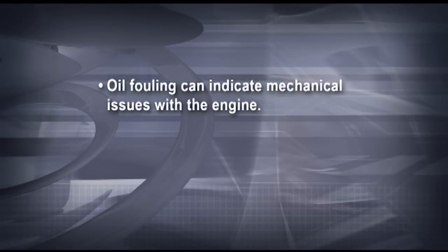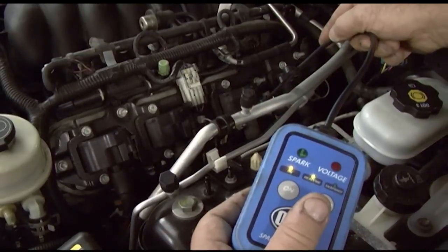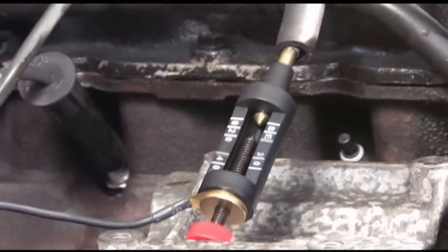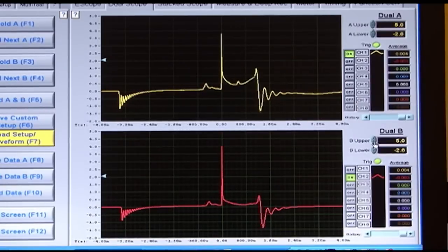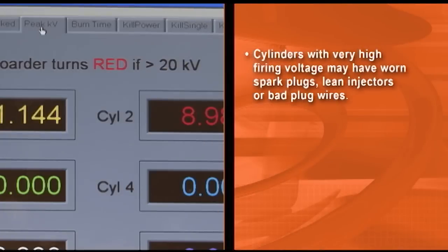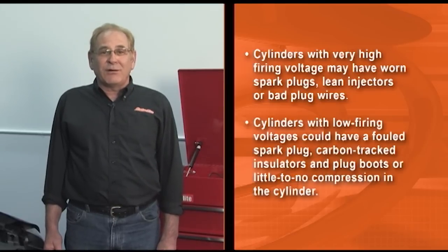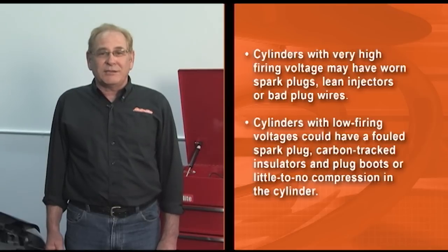Oil fouling can indicate mechanical issues with the engine, and fuel fouling would indicate that the engine is not firing. Test for spark at the plug first with a spark tester, then test output from the coil. A simple spark tester will show if the coil is producing enough voltage to fire a plug in a cylinder. If you have an oscilloscope, hook it up and take a look at the ignition waveforms. Cylinders with very high firing voltage may have worn spark plugs, lean injectors, or bad plug wires. Cylinders with low firing voltages could have a fouled spark plug, carbon tracked insulators and plug boots, or little to no compression in the cylinder.